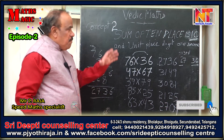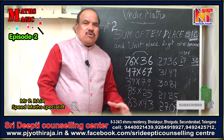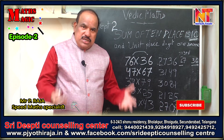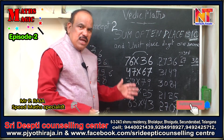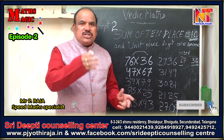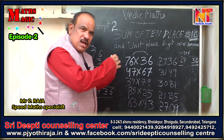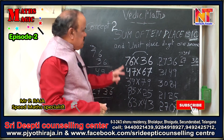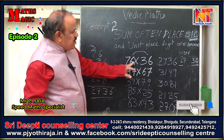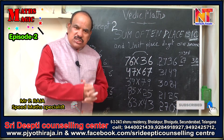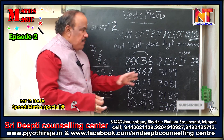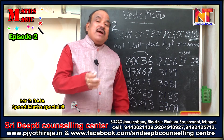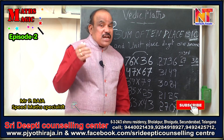So in Vedic Math, we have an easy method — we write left to right. Now, when we do 76 into 36, we get 2736. We have to strike the answer within 5 seconds. That is what this concept enables us to do.